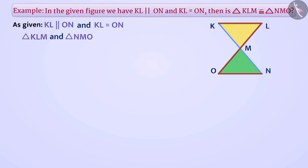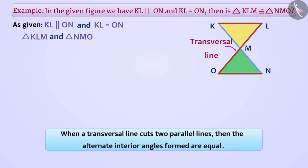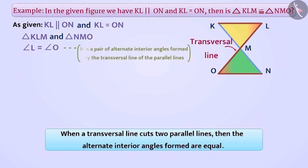We can consider OL as the transversal of both parallel lines. When a transversal line cuts two parallel lines, the alternate interior angles formed are equal. Therefore, angle L is equal to angle O because they are a pair of alternate interior angles formed by the transversal of the parallel lines. And we are given that KL is equal to ON.